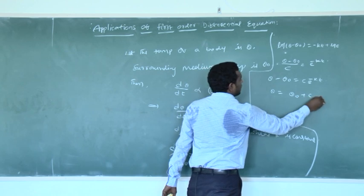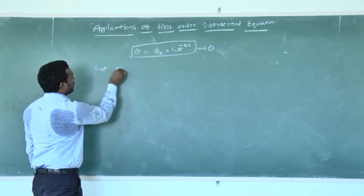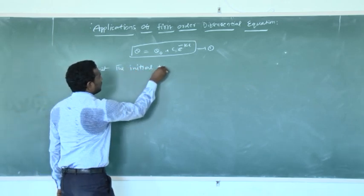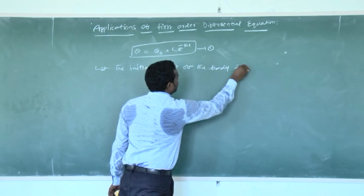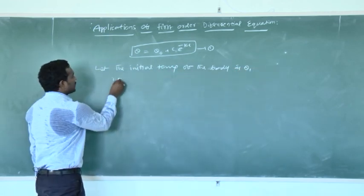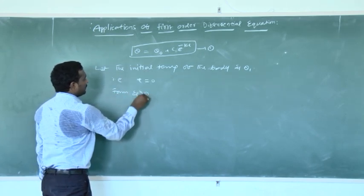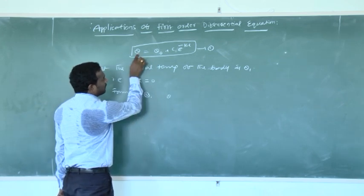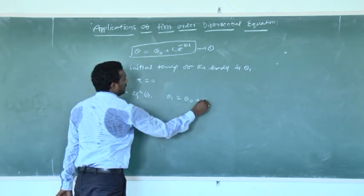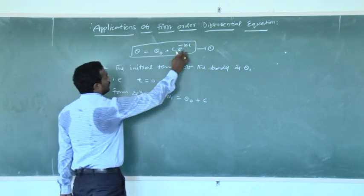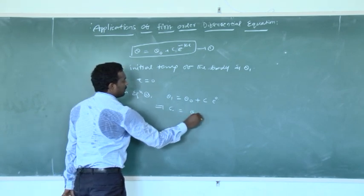Theta equals theta naught plus c into e power minus k t. Let the initial temperature of the body be theta 1. At time t equals 0, from the equation, theta 1 equals theta naught plus c into e power 0. Since e power 0 is 1, we get c equals theta 1 minus theta naught.